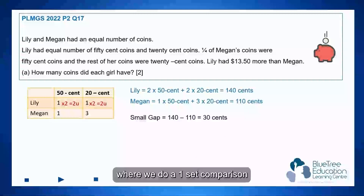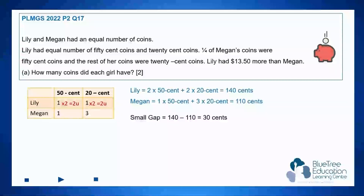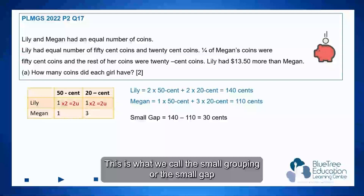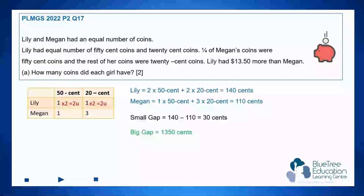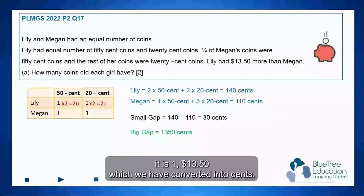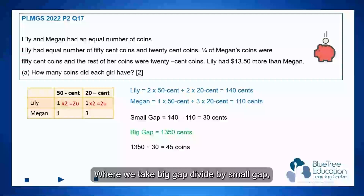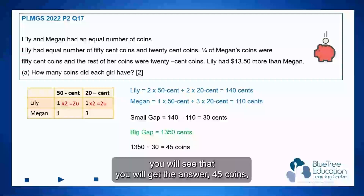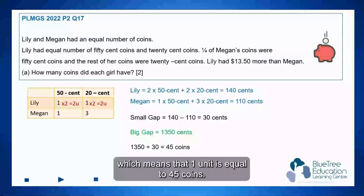When we do a one-set comparison using 140 cents minus 110 cents, you get 30 cents. This is what we call the small grouping or the small gap. And as for the big gap or the big difference, it is $13.50, which converted into cents is 1350 cents. When we take big gap divided by small gap, you will get the answer 45, which means one unit is equal to 45 coins.